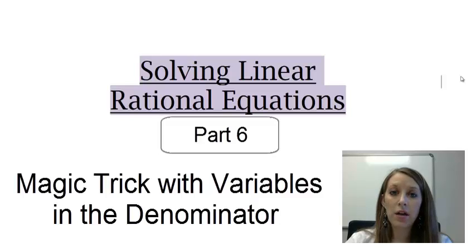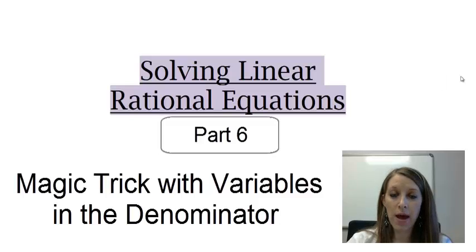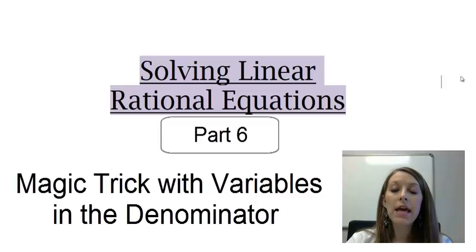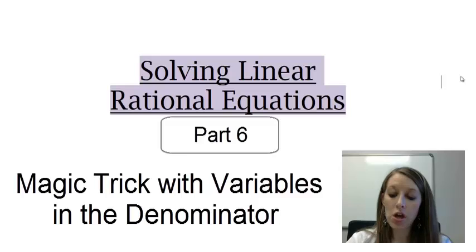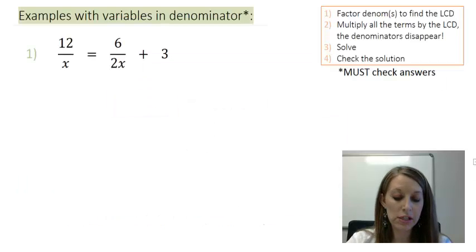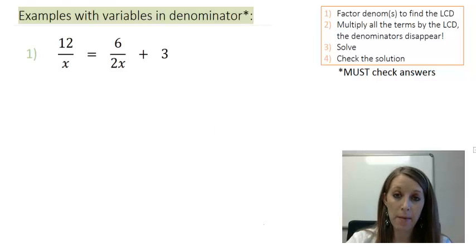We are focusing on solving linear equations when there are fractions involved. We just learned the magic trick method, but in those examples we only had numerical values in the denominator. In these examples, we are going to have variables or letters in the denominator. So let's go ahead and jump to the first example where we see some variables in the denominator.